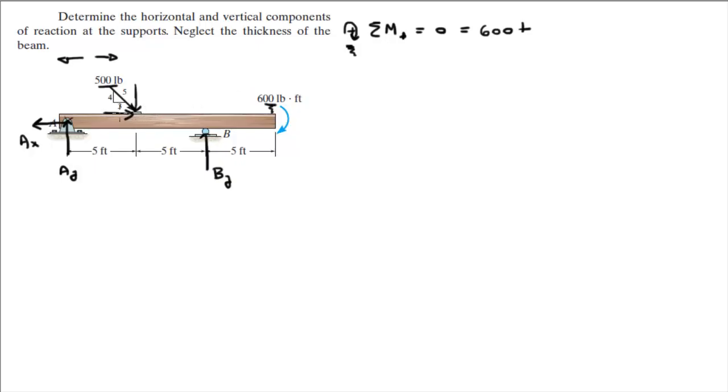The component going straight to the right is creating no moment because it's going directly away from A. Remember, we're neglecting the thickness of the beam and the one, this component is equal to 400 pounds.